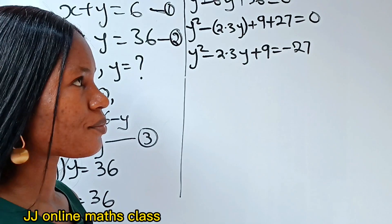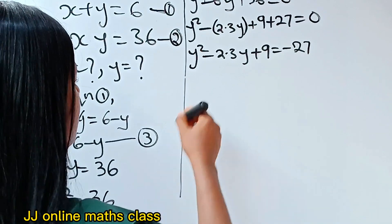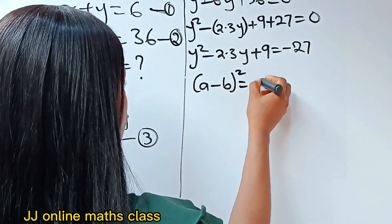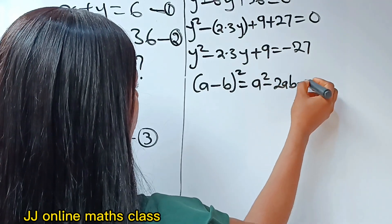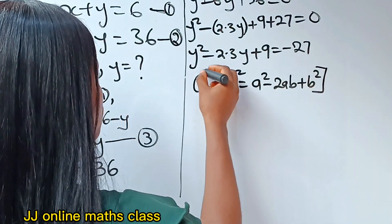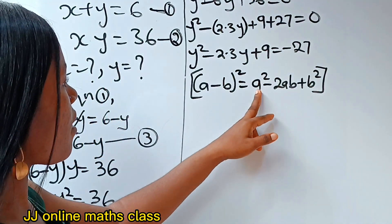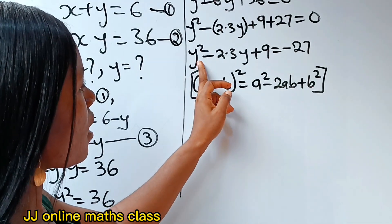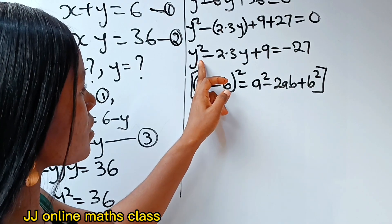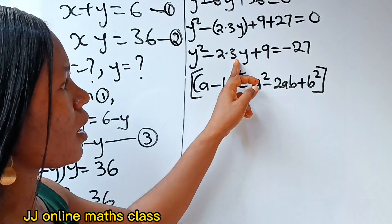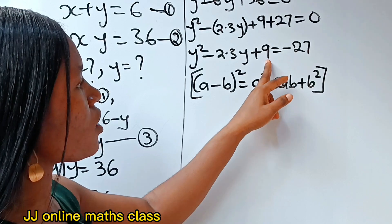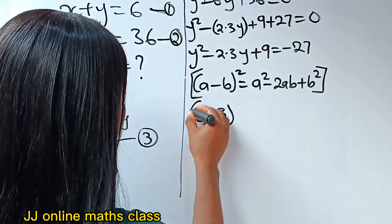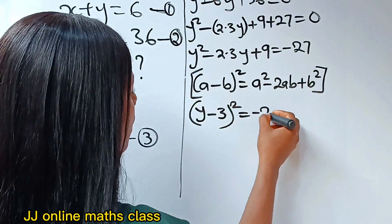Looking at this, it is the same as the difference of two squares identity. The identity for a minus b all squared is a squared minus 2ab plus b squared. Relating this to what we have: our a is y and our b is 3. So y squared minus 2·3·y plus 3 squared gives us y minus 3 all squared, which equals minus 27.